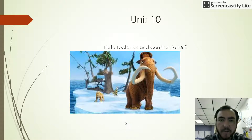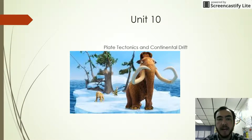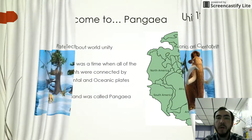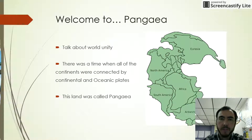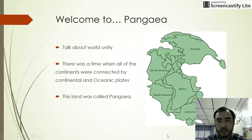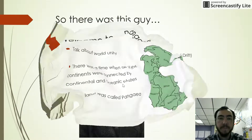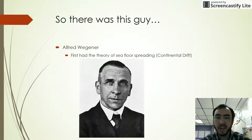Hey guys, so this is our second round at flipping the classroom, and this time we're going to look at unit 10: plate tectonics and continental drift. Millions and millions of years ago, it was proposed that our planet's landform looked just like this right here. This is a time when all the continents were connected by continental and oceanic plates, and this land was called Pangea.